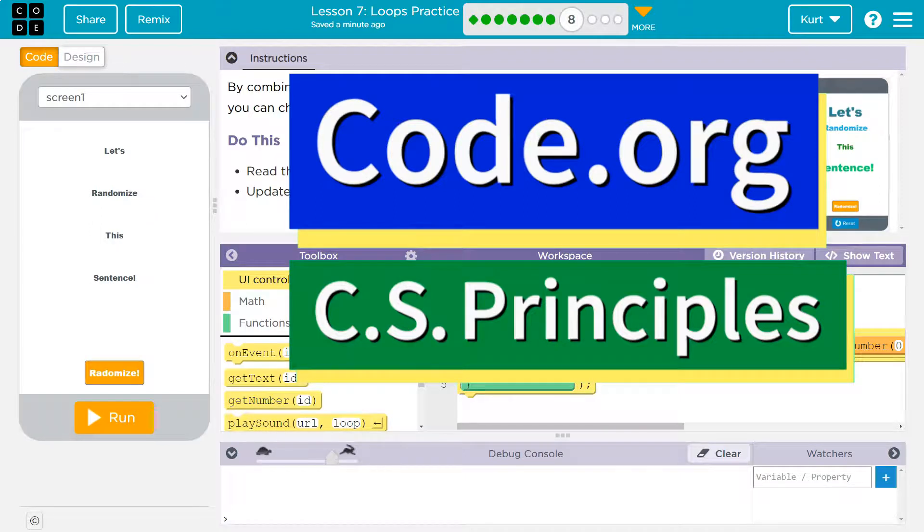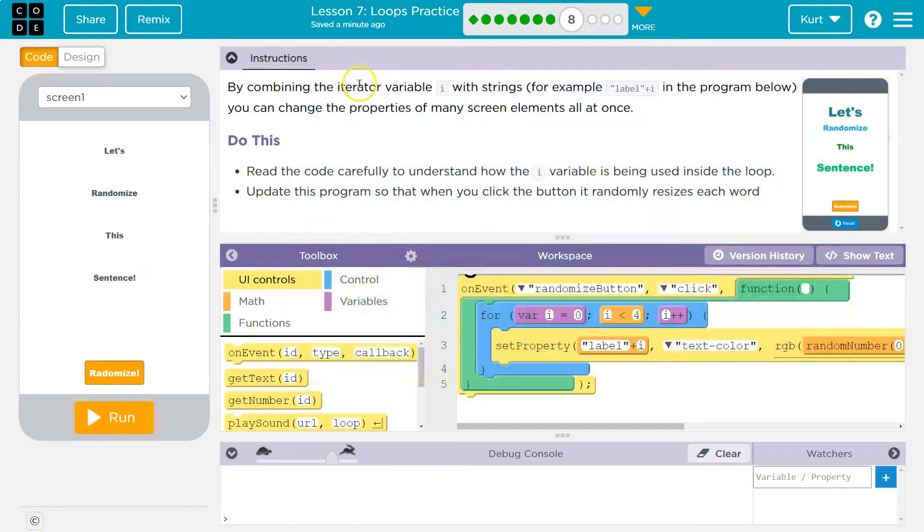This is code.org. Let's see what we're working on. By combining the iterator variable, iterator is i for this. That just means the variable we're using to count. With strings, for example, label plus i in the program below, you can change the properties of many screen elements at once.